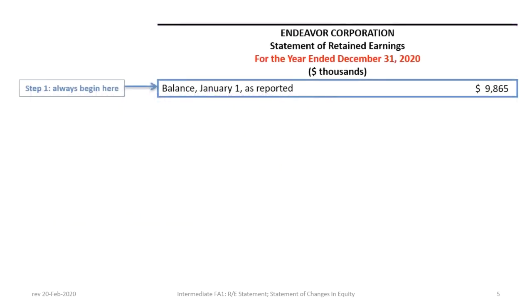We begin by identifying the correct title for an ASPE retained earnings statement. We always start with the full name of the company — Endeavor Corporation — followed by 'Statement of Retained Earnings' or 'Retained Earnings Statement,' either is acceptable. This statement covers the year ended December 31st, 2020, and our scale is in thousands. Step 1 is reporting the beginning balance: at January 1st, our beginning retained earnings balance is $9,865,000.